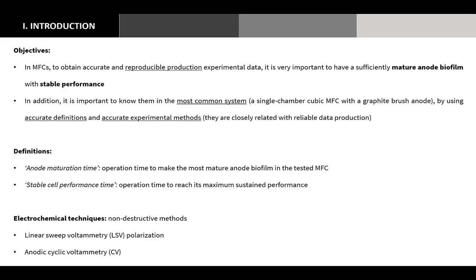It is important to know the operation time for retaining a mature anode biofilm and stable performance accurately in the most common system — a single chamber cubic MFC with a graphite brush anode. This cell type has been widely used because of its simple structure, small size, easy operation, and high performance, and because accurate definitions and experimental methods are closely related to reliable data production.